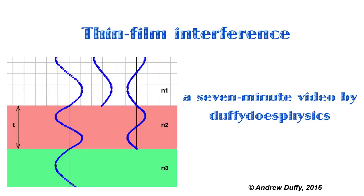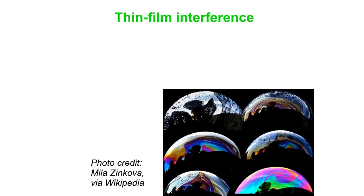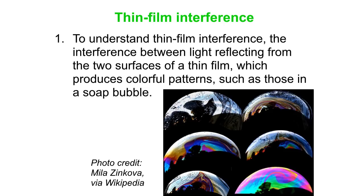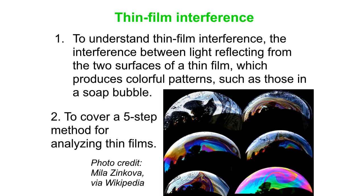Thin film interference. We have two goals for this one. We want to understand thin film interference. What is that? It's the interference between light reflecting from the two surfaces of a thin film. You can get nice, colorful patterns like that, such as what you get with a soap bubble. We're going to cover a five-step method for analyzing pretty much any thin film situation.